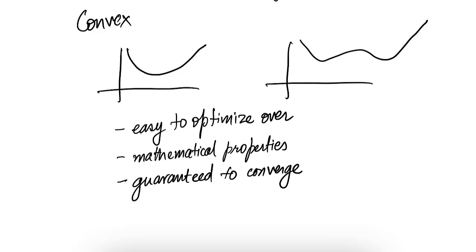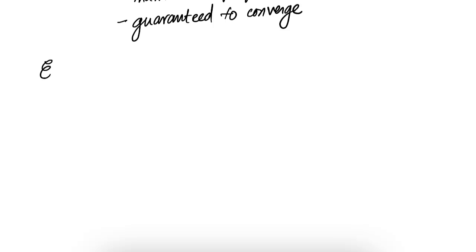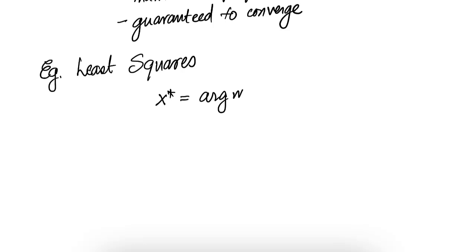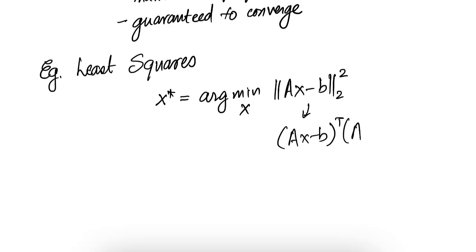Let us take a look at some optimization problems which are also convex. Consider the least squares problem — I am sure you have seen this before. The least squares problem looks like this: x star is equal to arg min over x of the norm of Ax minus b squared. The arg min means we are picking the x that minimizes this quantity, calling it x star. Note that this norm squared can also be written as (Ax minus b) transpose (Ax minus b).